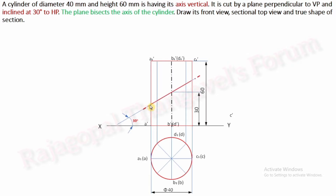Now you can shift this thin inclined 30-degree line to a section plane. The topmost portion is the removed part and the bottom is the remaining portion. We can convert the remaining portion of the solid into thick lines. Being a cylinder, only the boundary surface will be visible — there are no intermediate edges. The intermediate projectors are purely for convenience. Now you can identify the cutting points of the section plane. The first cutting point is 1 dash; extend the projector to get point 1. The next cutting point is on the axis — this is B, B1 dash.